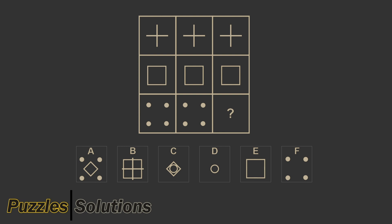In the case of this specific puzzle, the correct answer is F. This is because answer F conserves the pattern that all images in each row are identical.